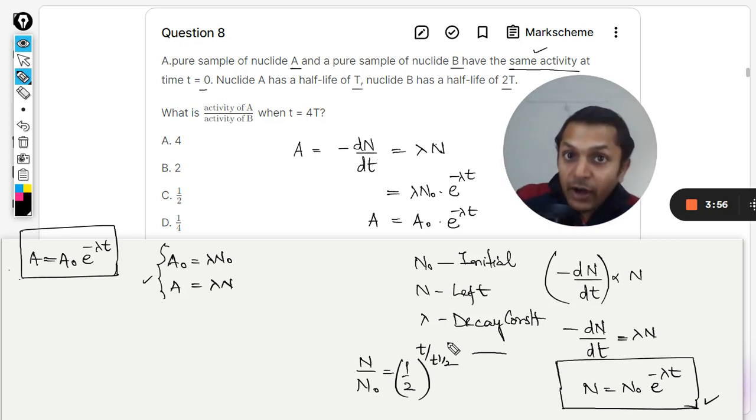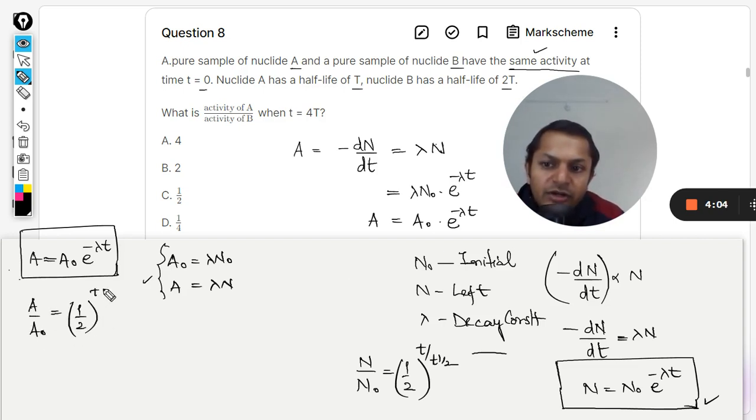Same formula can be used here. So A divided by A₀ equals half raised to power t divided by t_half. Same formula. This is what we are going to use in this question. This much is for the background information and this we are going to see now.